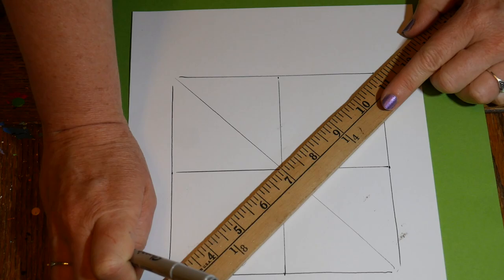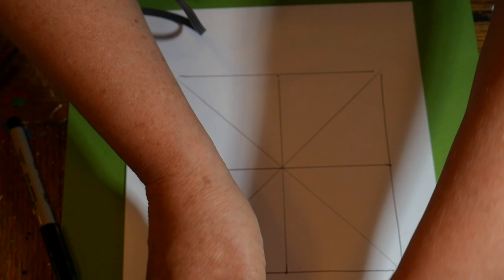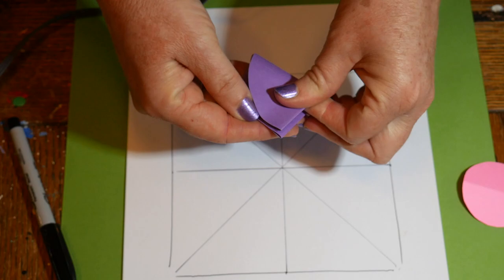Now we need something round. It's hard to trace around these things because you can't really see the center. So a quick way to do it is to cut a 4-inch circle and fold it into quarters.